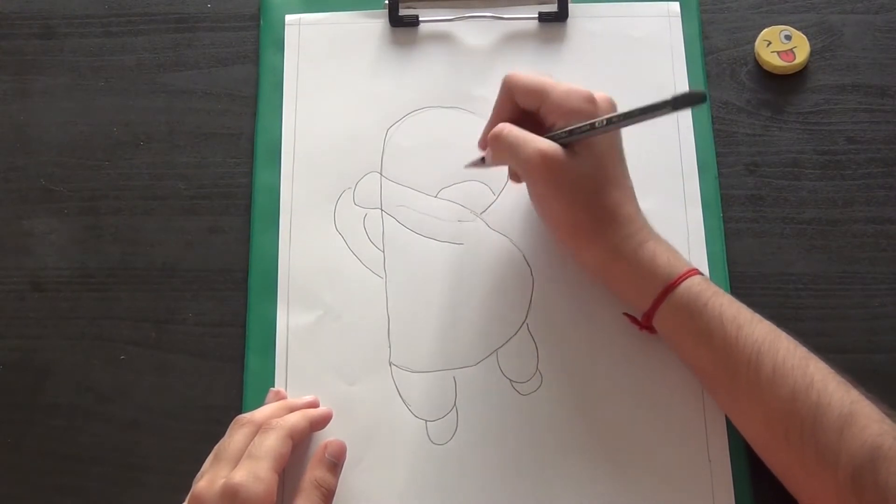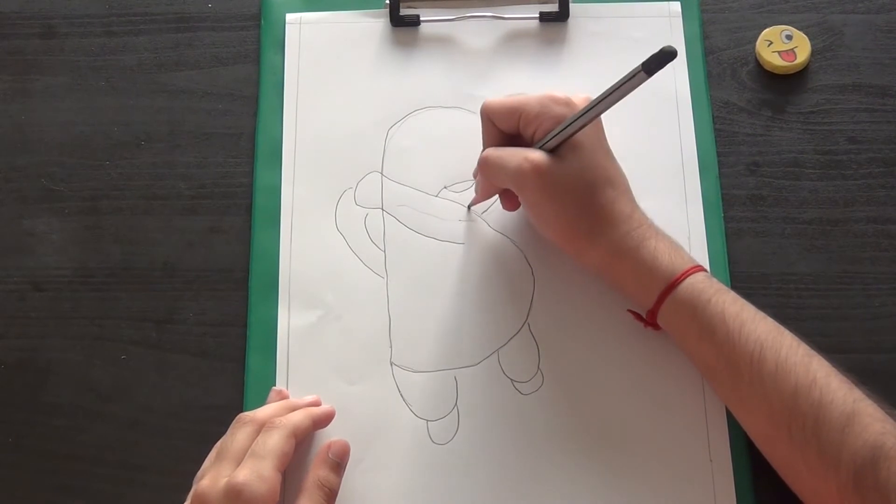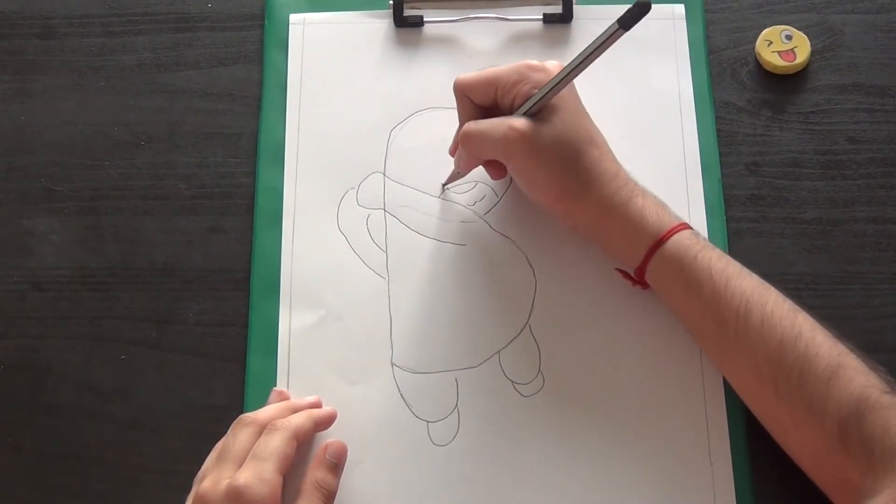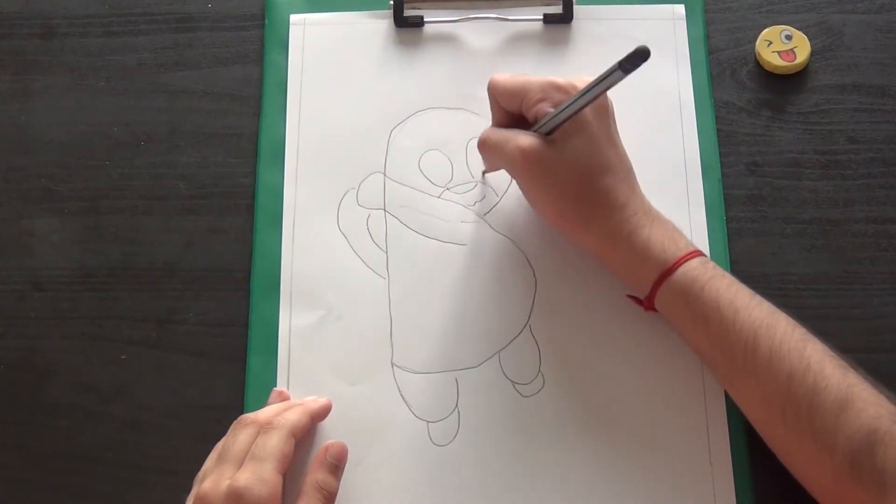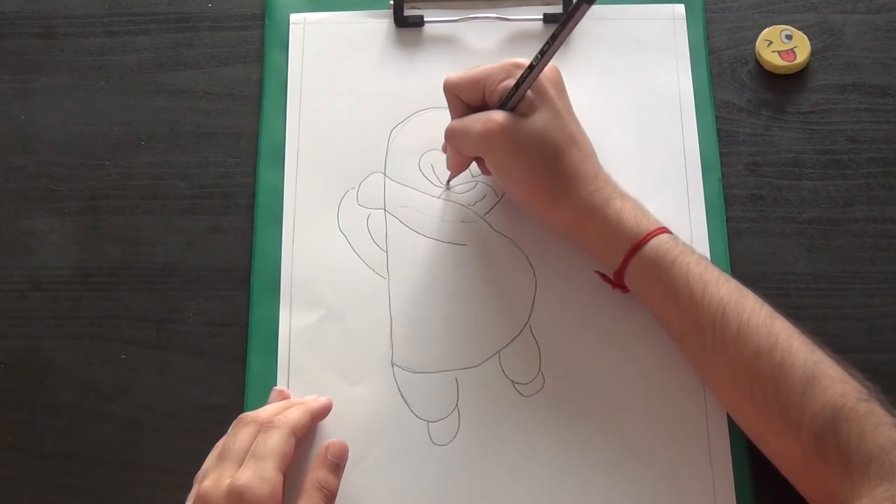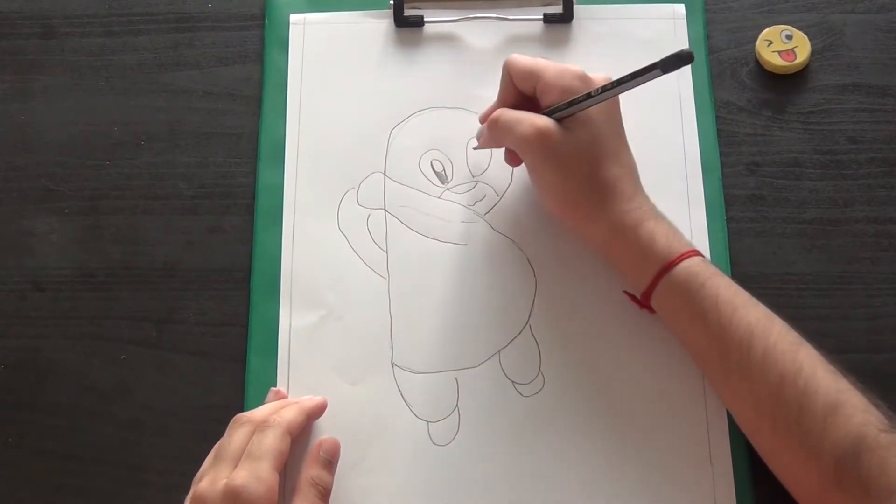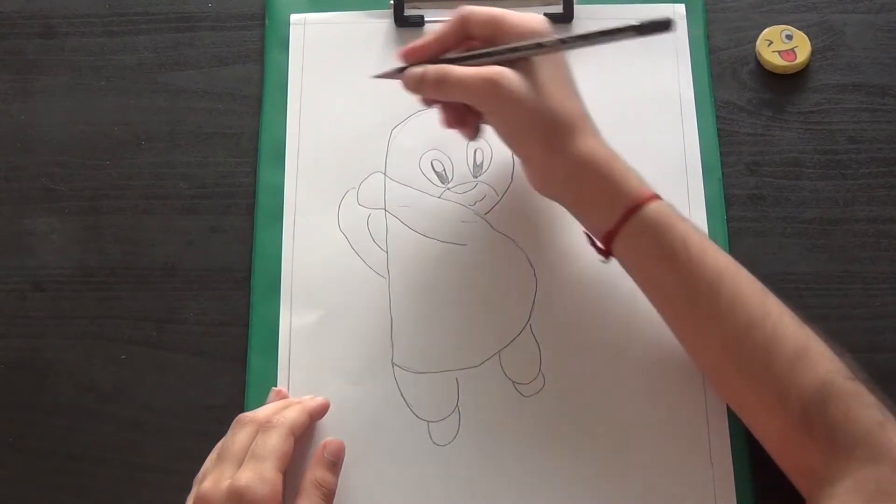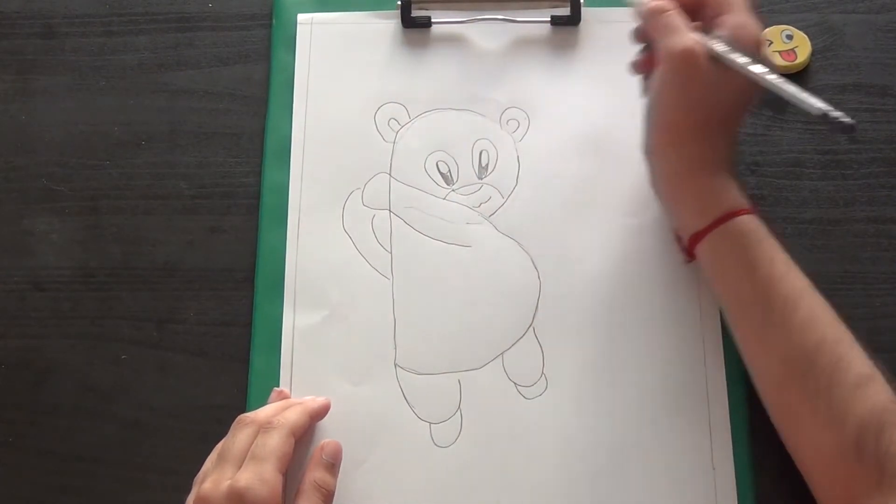Then here we can do the mouth. The hand is covering half the mouth, so just draw like this.